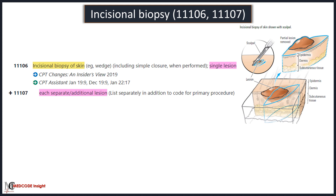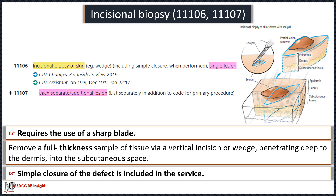Code 11106 is used for incisional biopsy of the skin for a single lesion, and add-on code 11107 is used for each separate or additional lesion. Incisional biopsy requires the use of a sharp blade to remove a full-thickness sample of tissue via a vertical incision or wedge penetrating deep to the dermis into the subcutaneous space. Although closure is usually performed after incisional biopsies, simple closure is not separately reported.